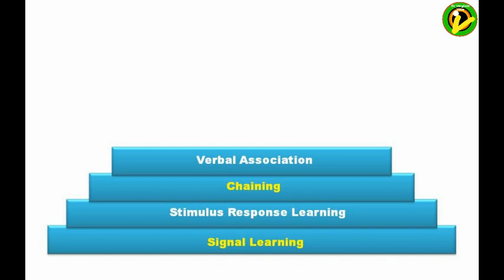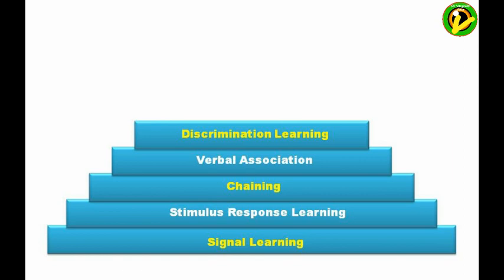Verbal association occurs when the learner makes associations using verbal connections, and is one of the key processes in the development of language skills. The fifth step, discrimination learning, involves developing the ability to make appropriate or different responses to a variety of similar stimuli that differ in a systematic way. The process is made more complex and hence more difficult by the phenomenon of interference, whereby one piece of learning inhibits another.